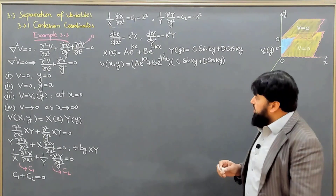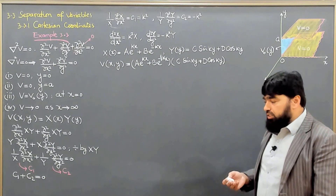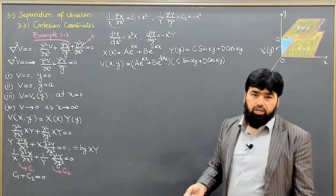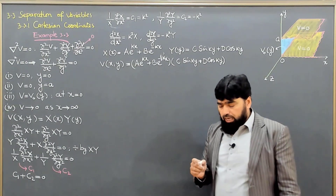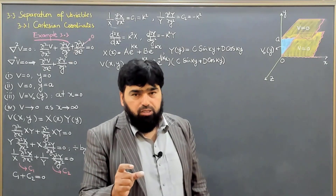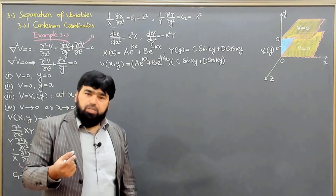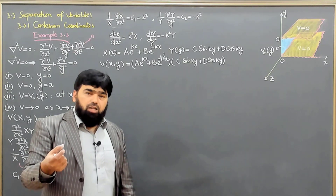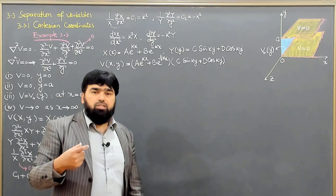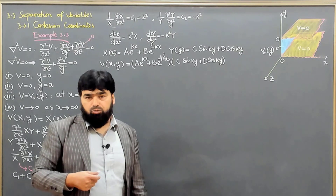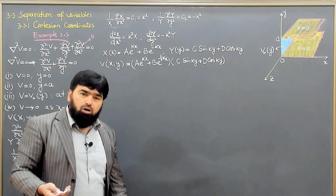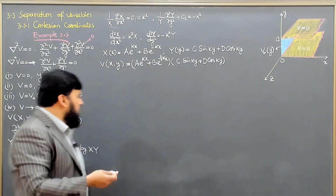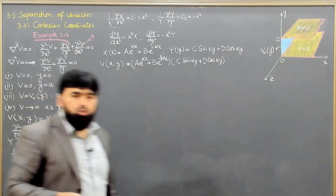As our solution is ready, applying the boundary conditions will determine the constants A, B, C, and D. When we determine those constants, we actually find the solution to the specific problem. This is a generalized solution — like a piece of cloth from which you tailor clothing to fit a specific person. That specific person is your geometry, and the boundary conditions tell you how to cut and shape the solution.